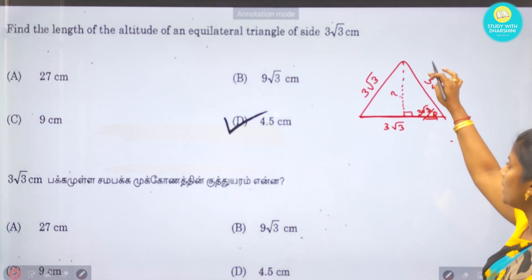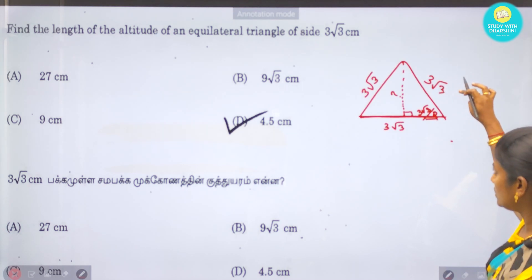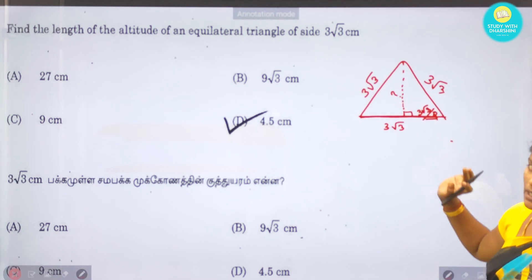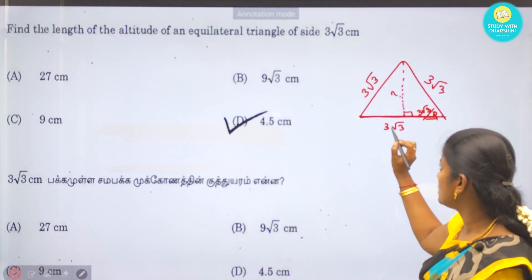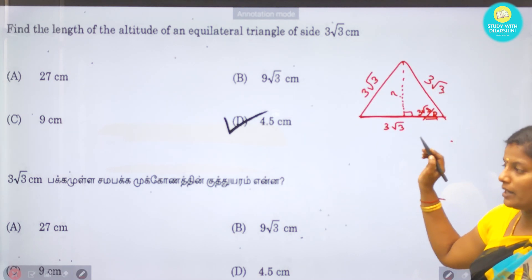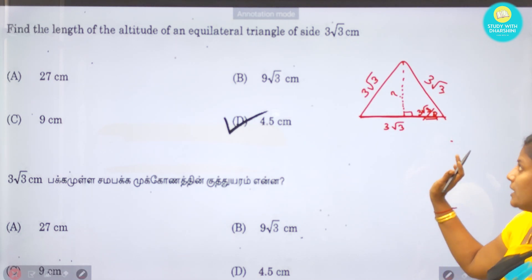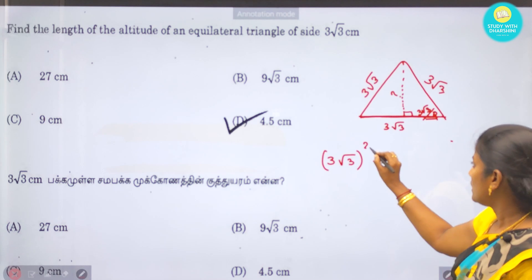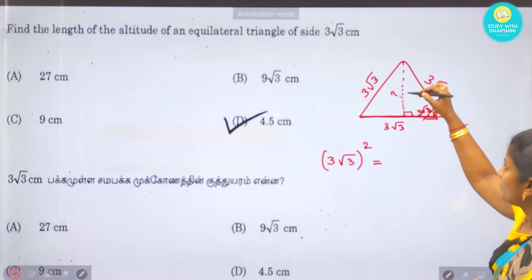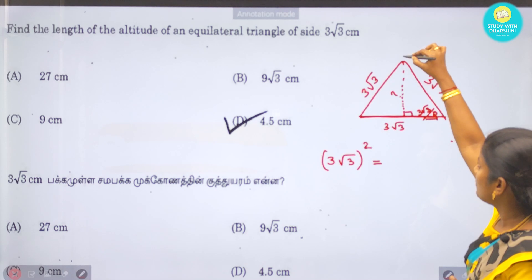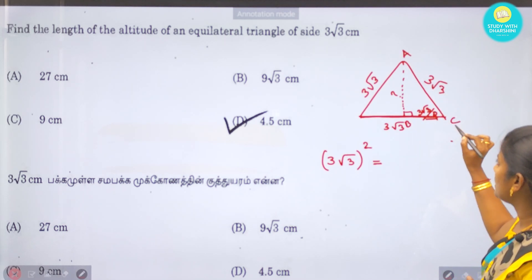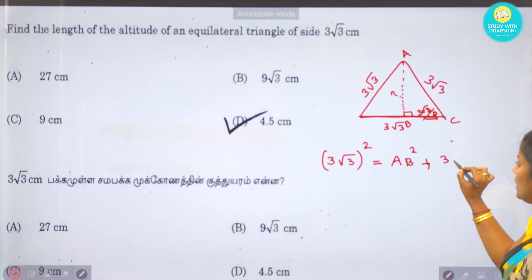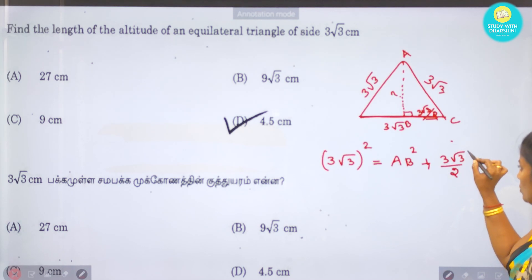Using Pythagoras theorem: hypotenuse squared equals the sum of the other two sides squared. We label the sides a, b, c. The hypotenuse is 3√3. So (3√3)² equals a² plus (3√3/2)². We add the two sides squared.